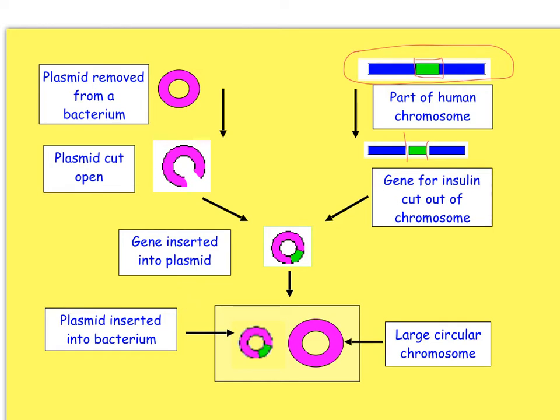Over here we have a situation where a plasmid has been removed from a bacterial cell. The plasmid can be cut open using enzymes as well. They use the same enzyme for this cutting open process as they've used for cutting the insulin gene out of the human chromosome, so that the gene will be able to fit into the plasmid or the gene can be inserted into the plasmid where it's been cut open.